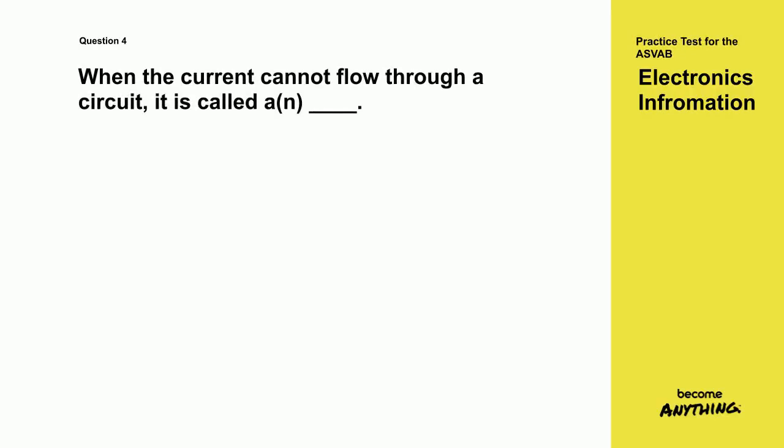Question 4. When the current cannot flow through a circuit, it is called a what? A. Series circuit. B. Open circuit. C. Parallel circuit. D. Closed circuit.